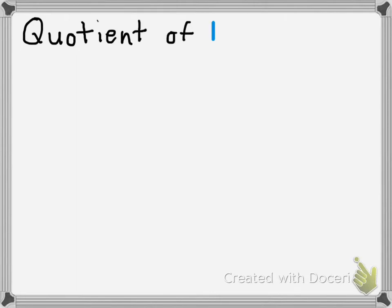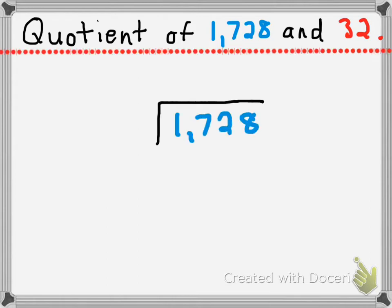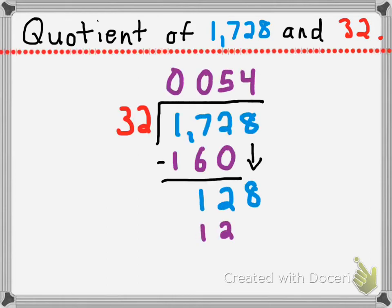Let's go ahead and look at a problem. We'll look at the quotient of 1,728 divided by 32. The dividend is 1,728, shown in blue, and the divisor in red is 32. When I divide, I can see that after showing my work, the quotient is 54.